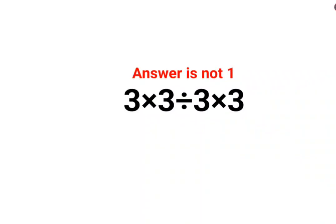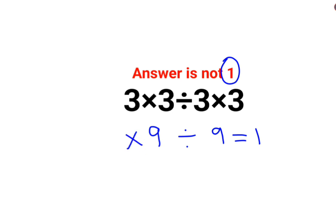Welcome everyone. Today we are going to understand why the answer for this question is not supposed to be 1. See, 3 multiplied by 3 is 9. Here also we thought this is 9 and then we do the division. The answer comes out to be 1. This is incorrect.